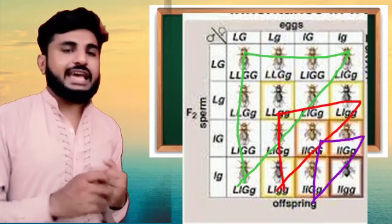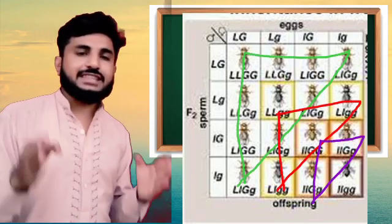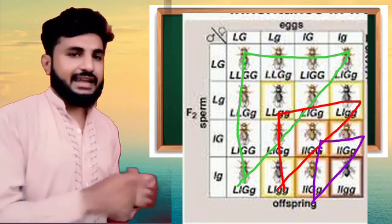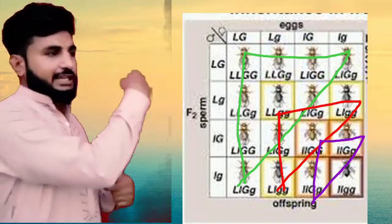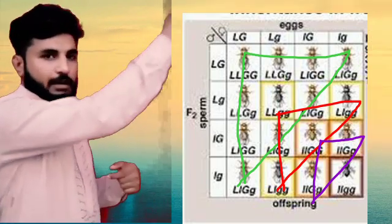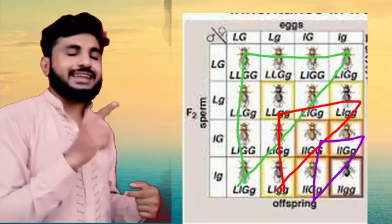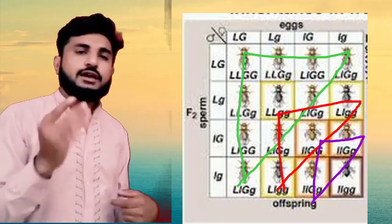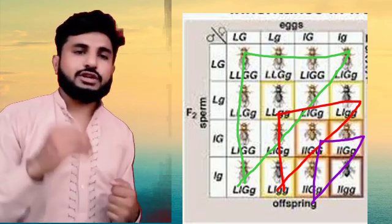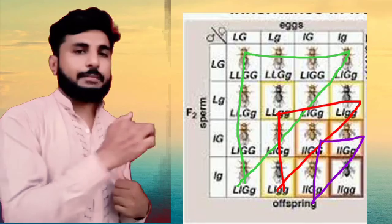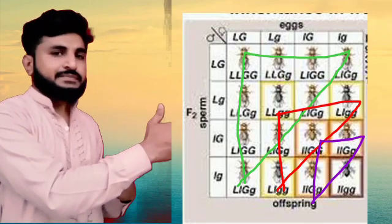From the results, we can see 9 large body size with gray color. Looking at the first row and checking all combinations, we count three with long body black color, three with short gray, and one with short black.